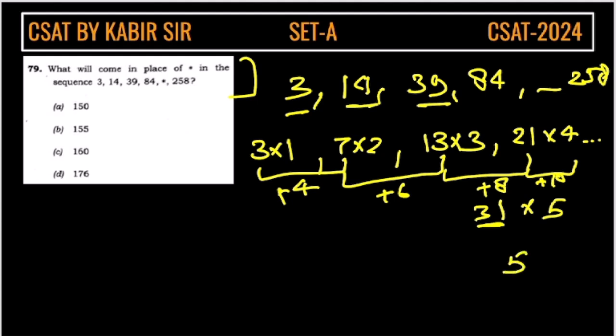So, we will multiply this as 5, this is 155. So, the answer will be option A.